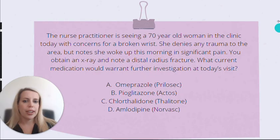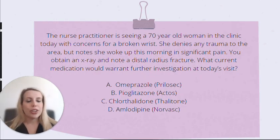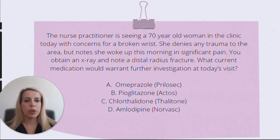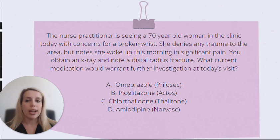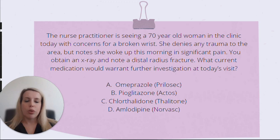Let's jump to our next question. The nurse practitioner is seeing a 70-year-old woman in the clinic today with concerns for a broken wrist. She denies any trauma to the area but notes she woke up this morning in significant pain. You obtain an x-ray and note a distal radius fracture. What current medication would warrant further investigation at today's visit? Is it A: Omeprazole (Prilosec), B: Pioglitazone (Actos), C: Chlorthalidone (Thalitone), or D: Amlodipine (Norvasc)?